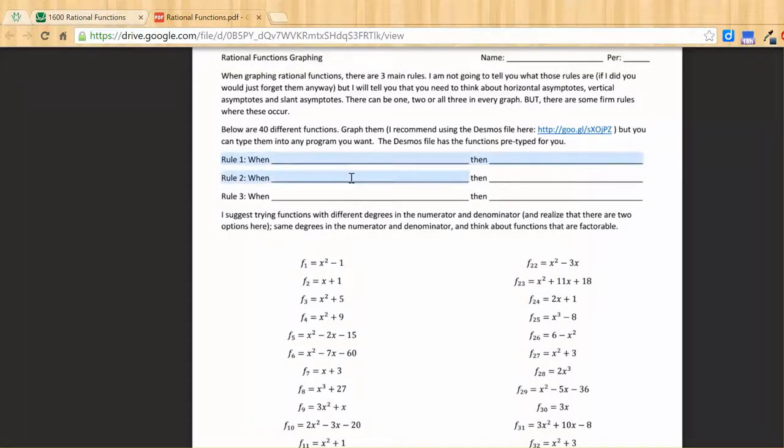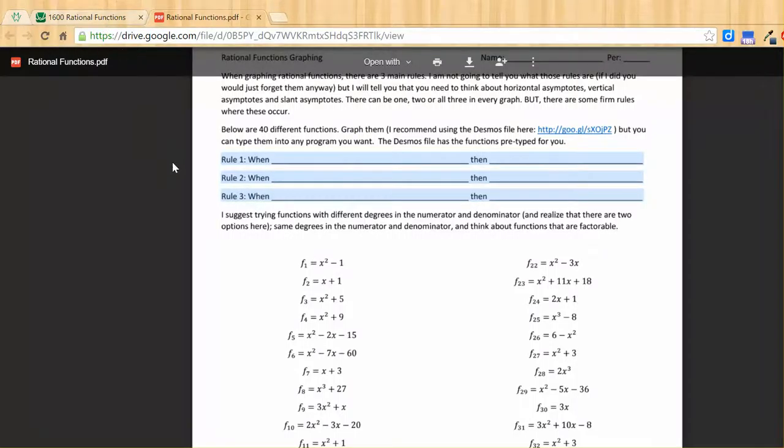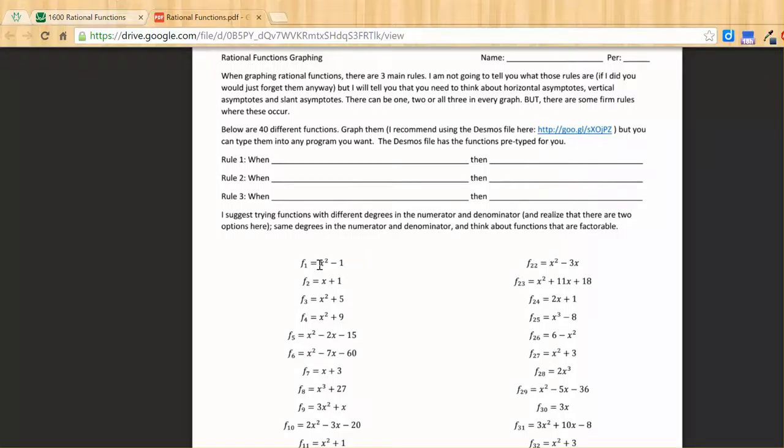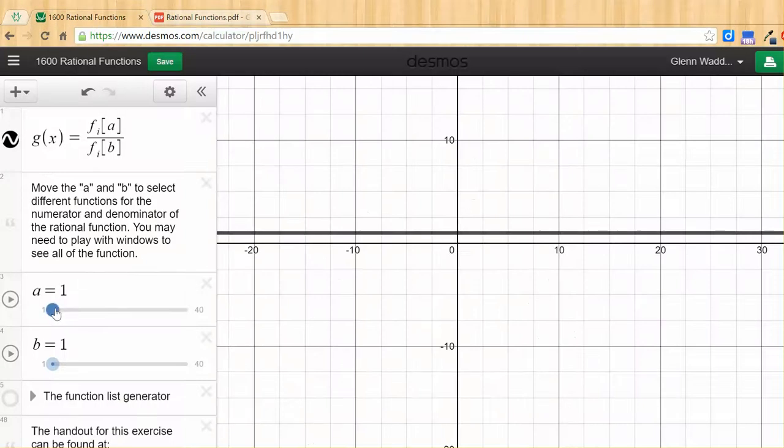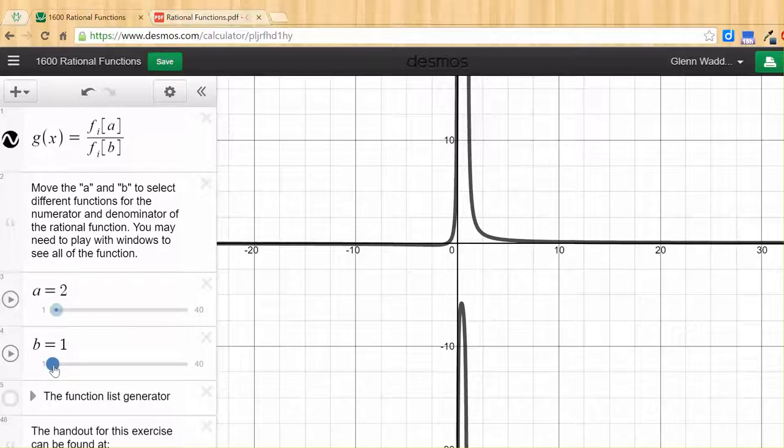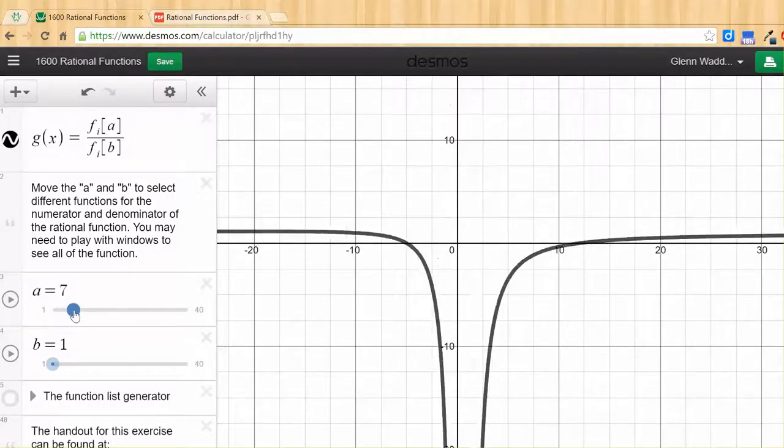And the goal is to figure out what are the three rules that are driving the difference between these different functions. So, if we have x plus 1 divided by x squared minus 1, we have this function, this graph. Two vertical asymptotes, one horizontal asymptote. And the challenge is to figure out and play with and work through all of the different possibilities.